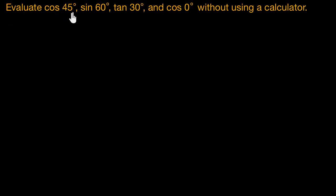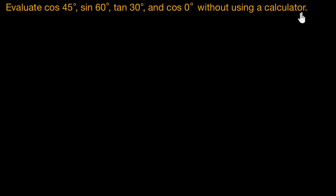Evaluate cos 45 degrees, sin 60 degrees, tan 30 degrees, and cos 0 degrees without using a calculator. To figure out these values without using a calculator, we can think about two special right triangles.